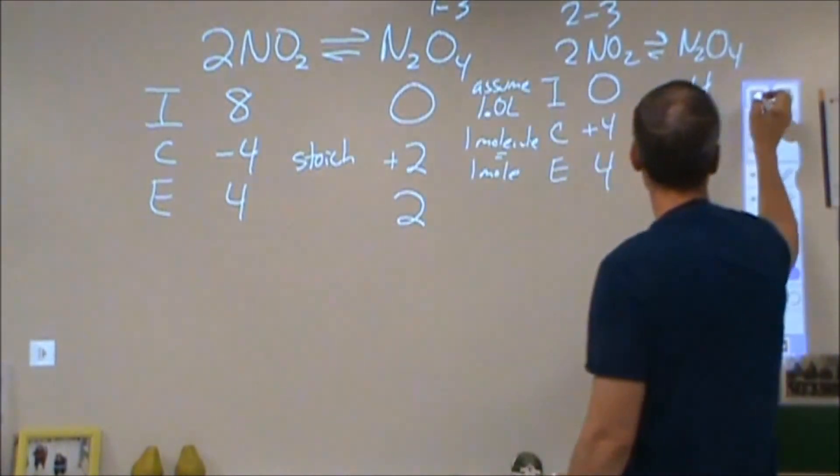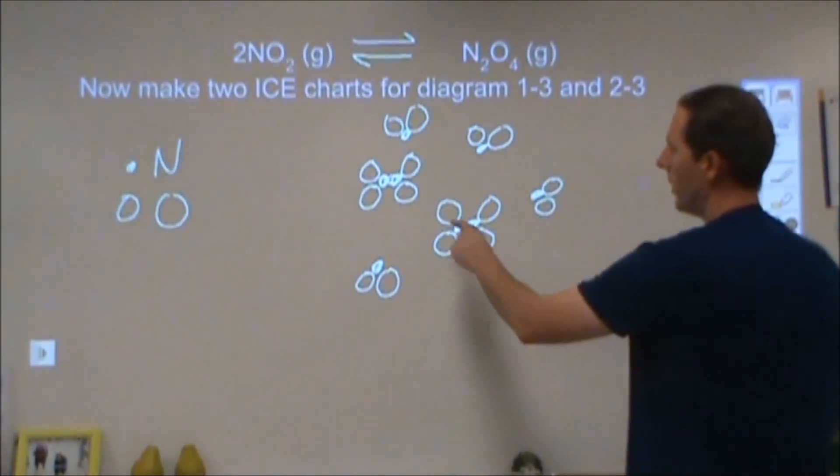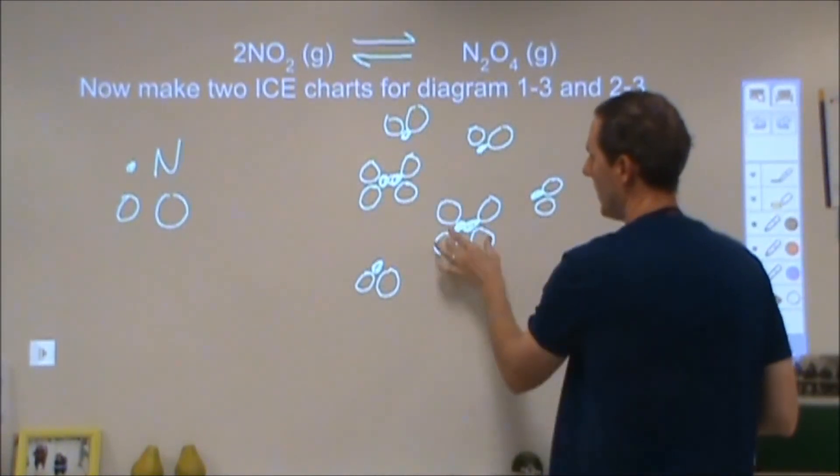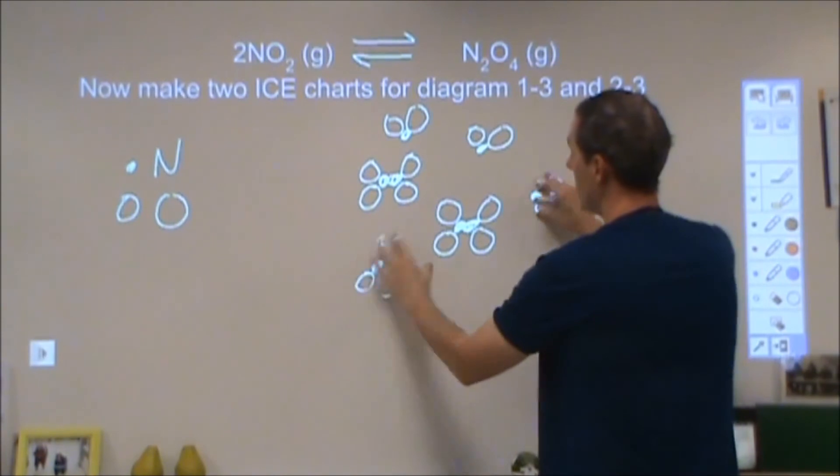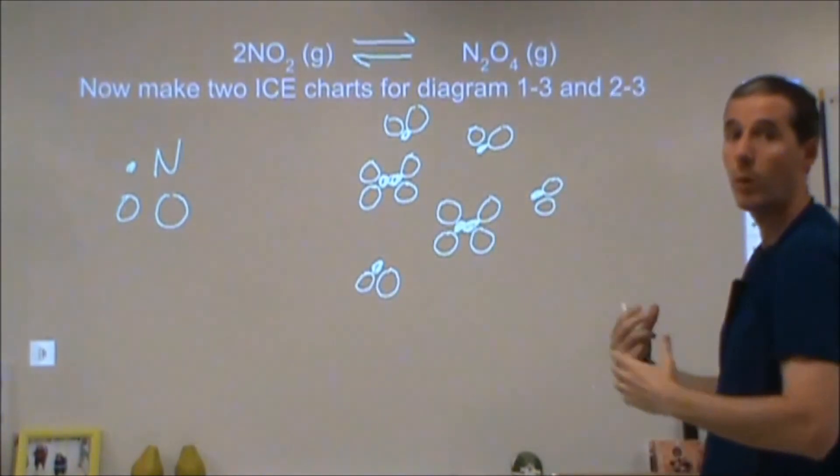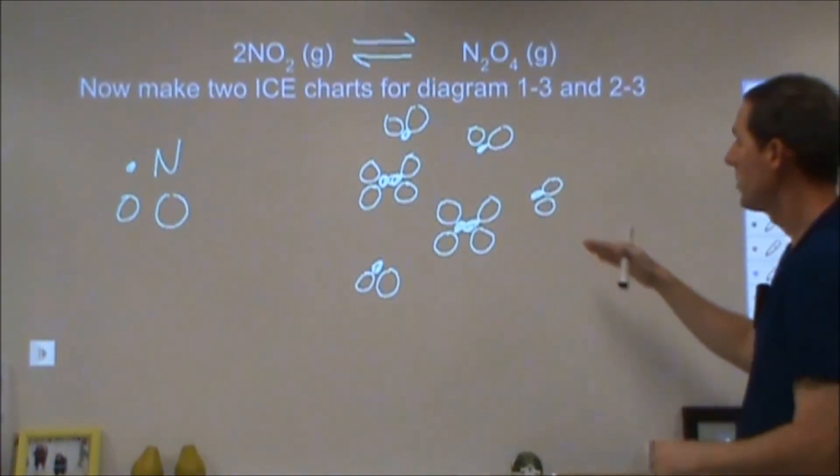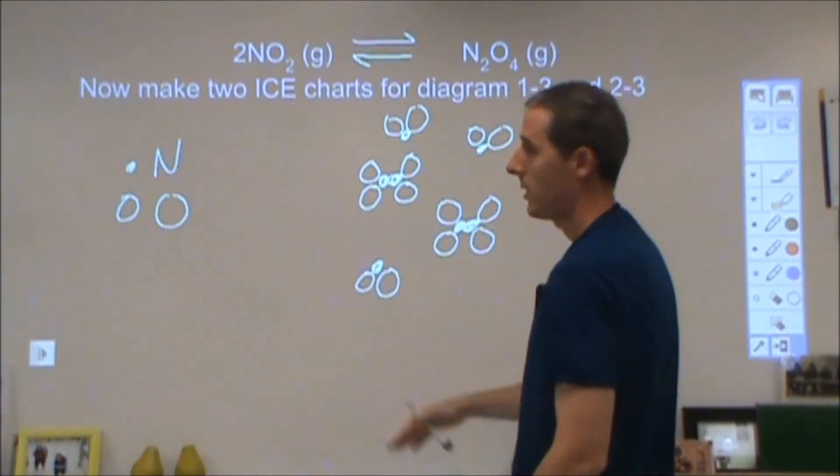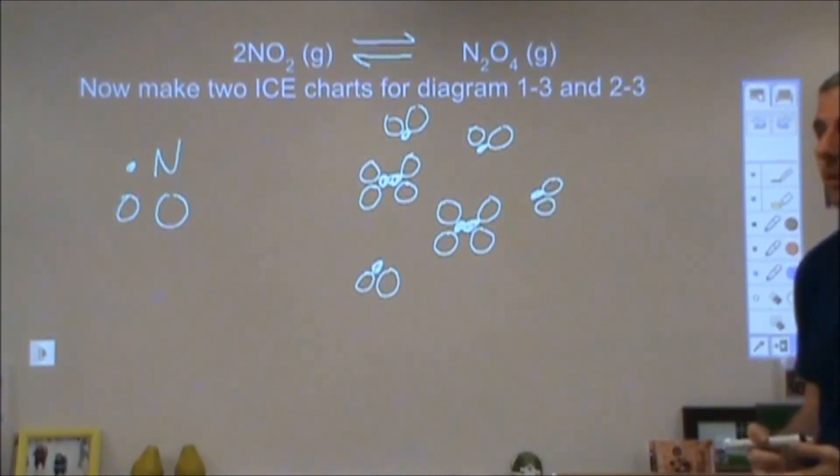Then we're going to an equilibrium where we have a dynamic equilibrium where these are turning back into these, these are turning into these at the same time. Those two rates are occurring at the same time, so the amounts of these do not change as time progresses, or at least they don't do anything other than fluctuate.